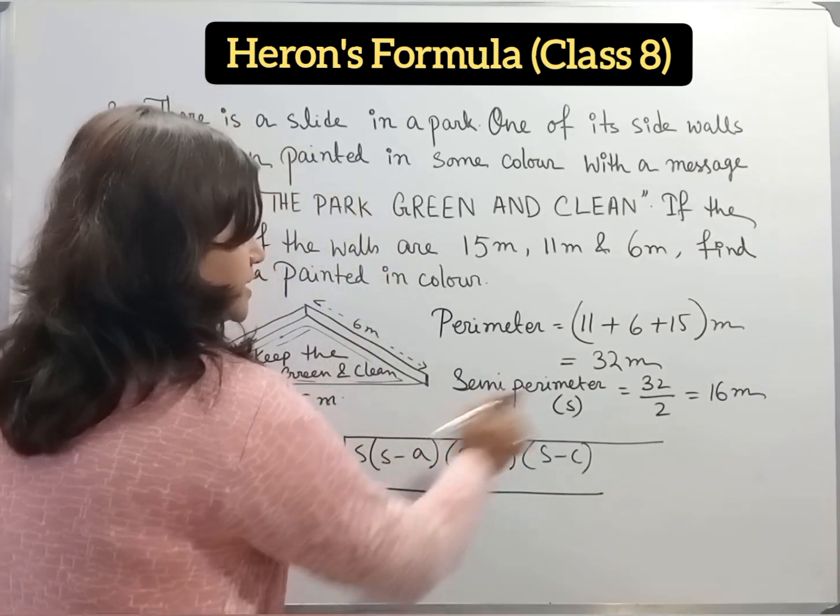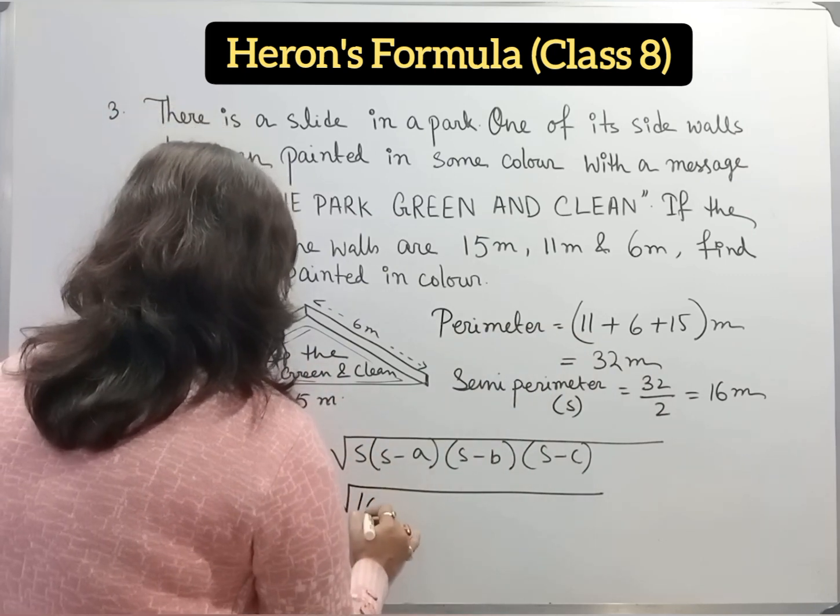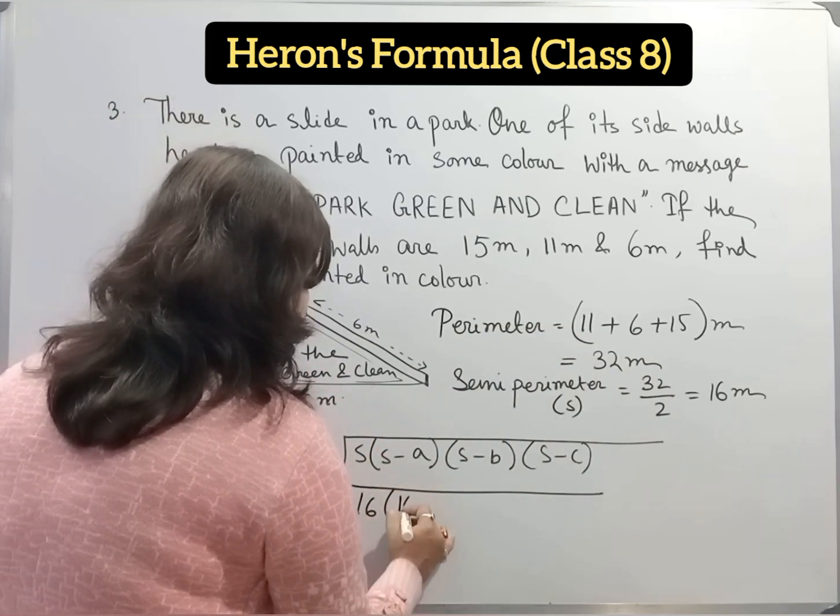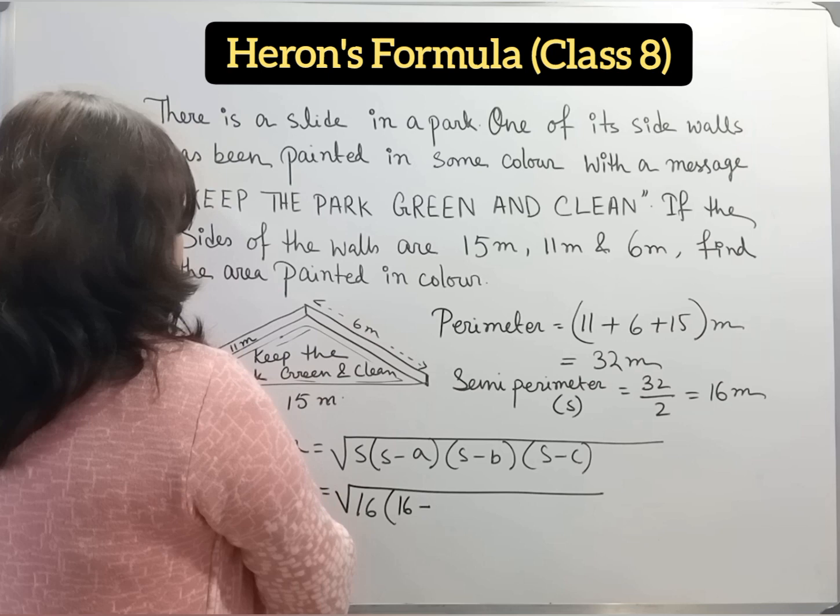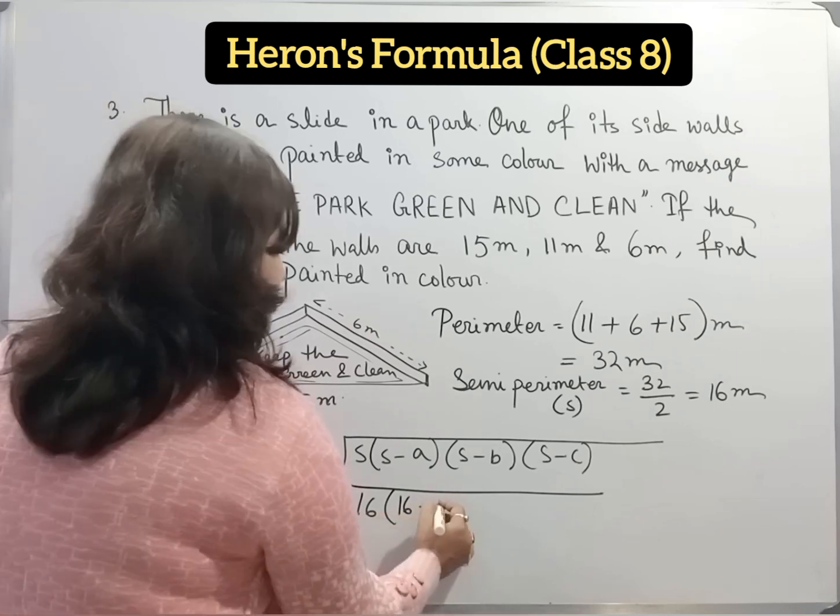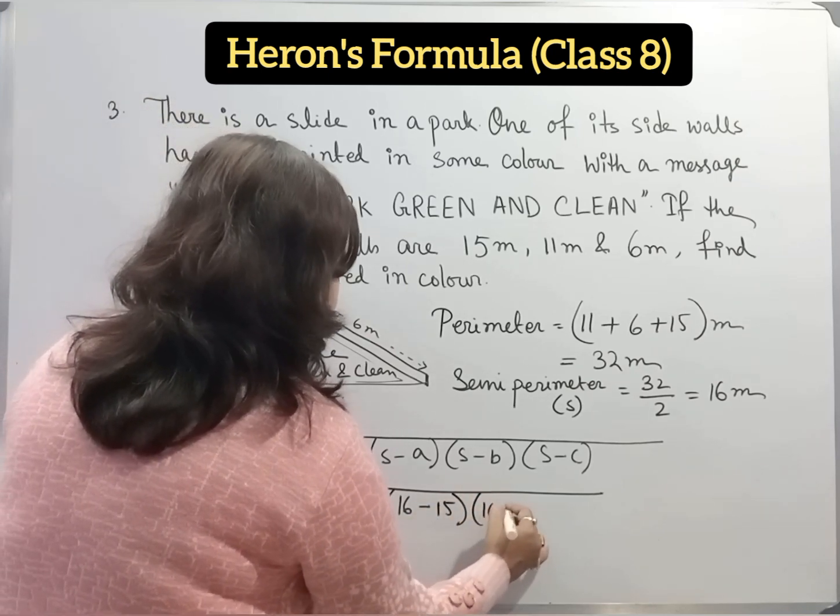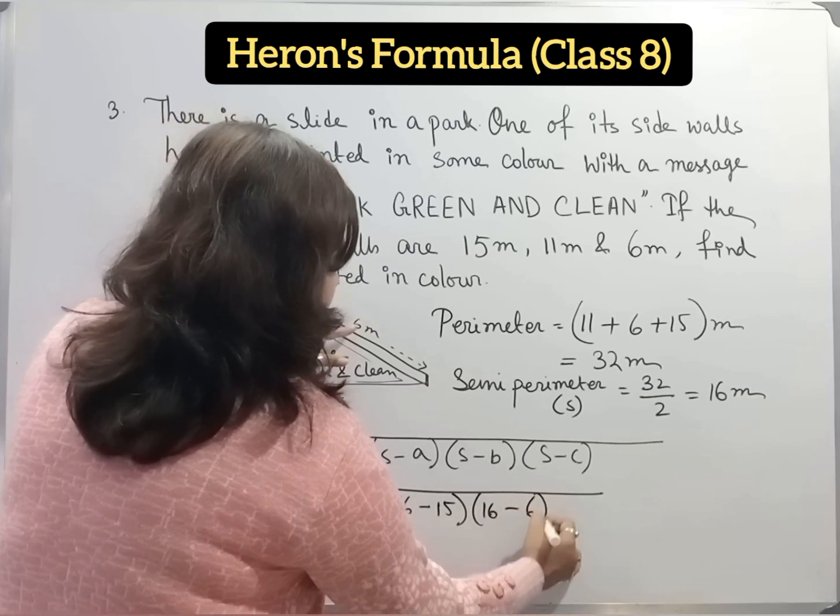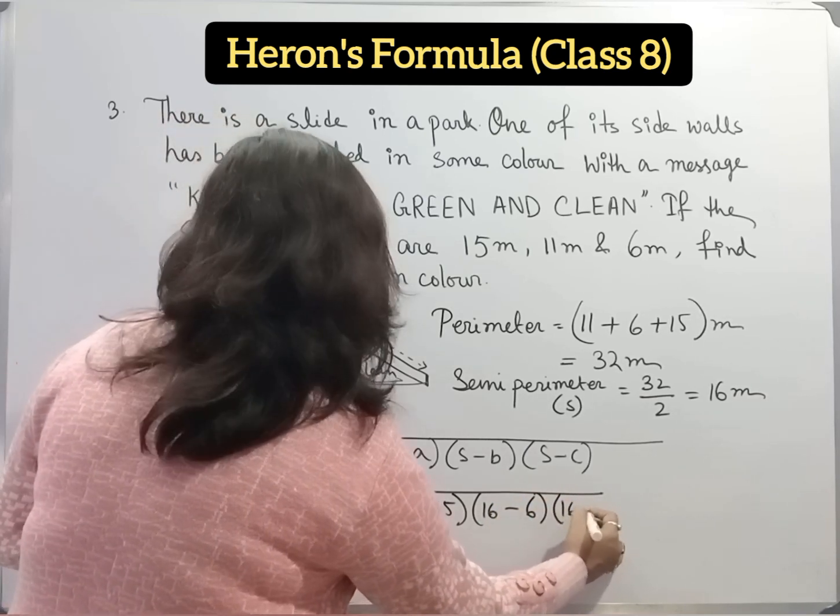First, we put the value of S. S equal to 16. Now S minus A. 16 minus, we can take any side of this three sides. I will take 15. Then 16 minus 6 and 16 minus 11.